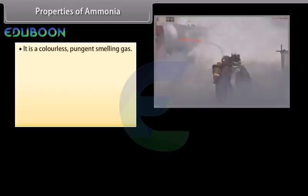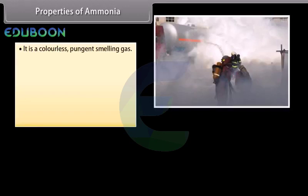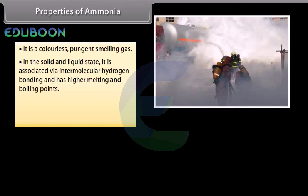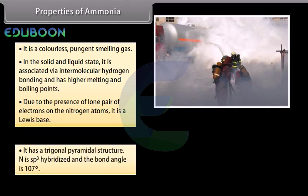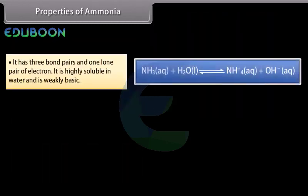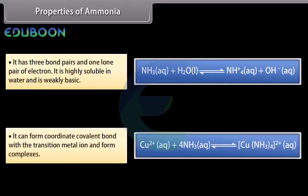A pressure of above 200 atm, a temperature of 700 K, and the presence of a catalyst favour the formation of ammonia. Ammonia is a colourless, pungent-smelling gas. In the solid and liquid state, it is associated via intermolecular hydrogen bonding and has higher melting and boiling points. Due to the presence of a lone pair of electrons on the nitrogen atom, it is a Lewis base. It has a trigonal pyramidal structure; nitrogen is sp3 hybridized with a bond angle of 107°. It has three bond pairs and one lone pair and is highly soluble in water and weakly basic.